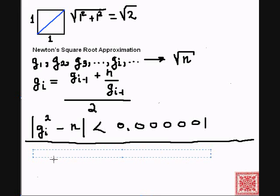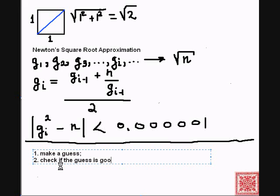Let's specify the algorithm for computing Newton's square root approximation. We're going to make a guess. Then we're going to check if the guess is good enough, and that's going to be testing the absolute difference. And if not, the guess is not good enough, we keep on making guesses. Otherwise, we just stop and return the guess.